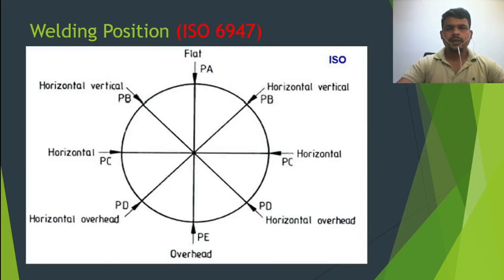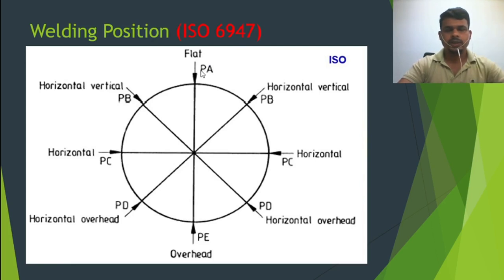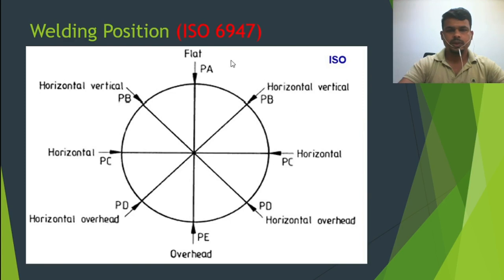You can see in the picture here: flat is PA, and horizontal vertical is PB. PA is the 1G or 1F position. If you consider this is the vertical and this is the horizontal, then in between is horizontal vertical — a 45 degree angle. This is called the PB position.